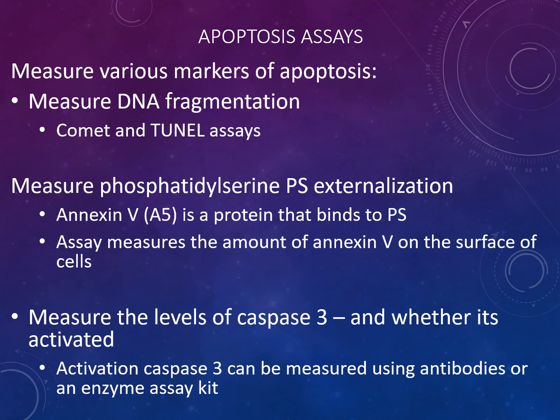There are various apoptosis assays to measure the markers of apoptosis. The comet and TUNEL assays measure DNA fragmentation. You can measure phosphatidylserine (PS) externalization — Annexin V is a protein that binds to PS, and the assay measures the amount of Annexin V on the surface of cells. We can also measure the levels of caspase 3 and whether it is activated, using antibodies.